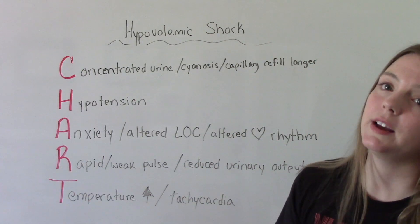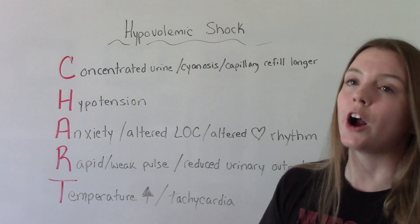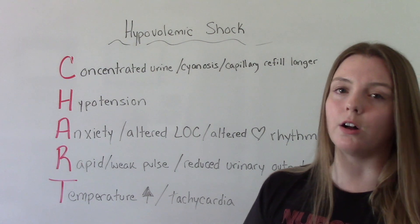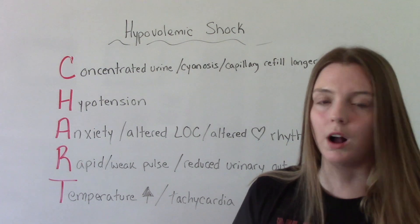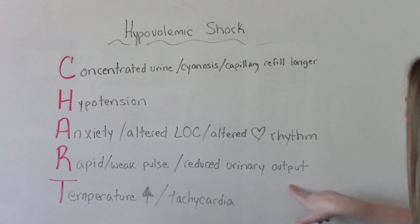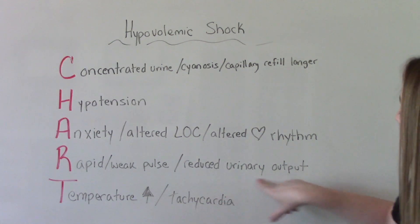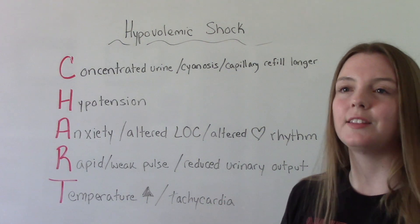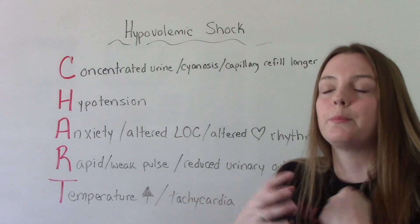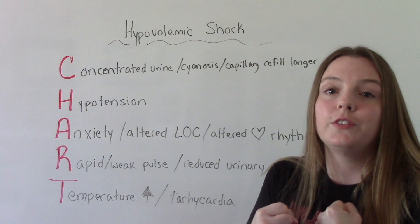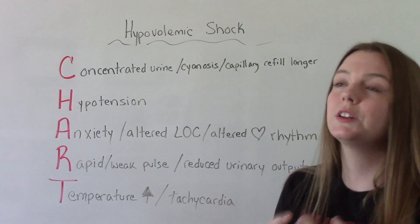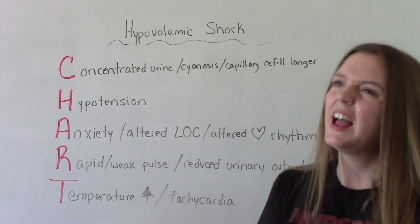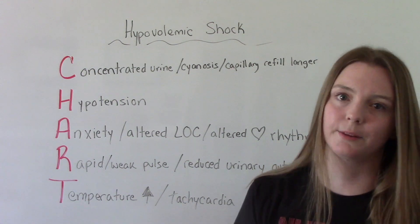They could have a rapid or weak, hard-to-find pulse — a thready pulse like a plus one. Reduced urinary output because the body is trying to preserve all of the volume and fluid that it has, so it's really not trying to get a lot of output there.